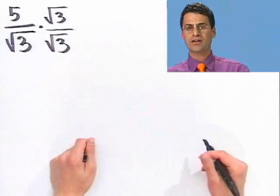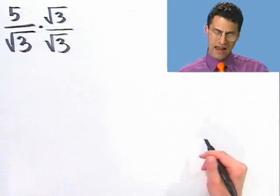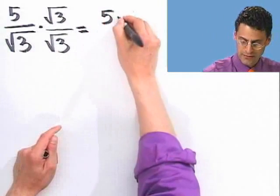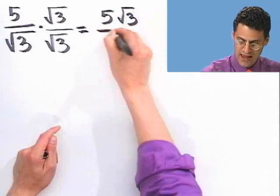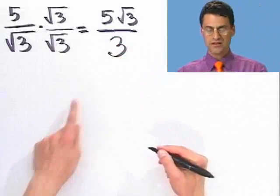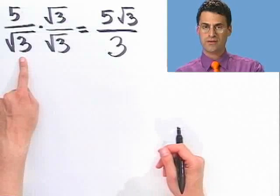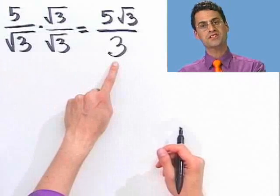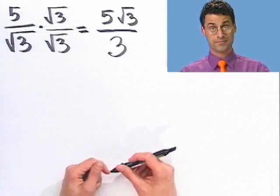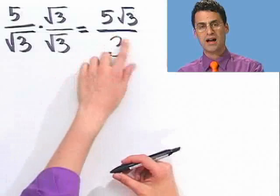This is not going to change the value of the fraction — it's still numerically equal to five divided by the square root of three. But look what happens: on the top I see five times the square root of three, and on the bottom I see the square root of three times the square root of three, which is just three. So now I have something equal to the original, but those discriminating people would be reasonably happy because the denominator no longer has a square root. This is often called clearing a denominator of a radical.